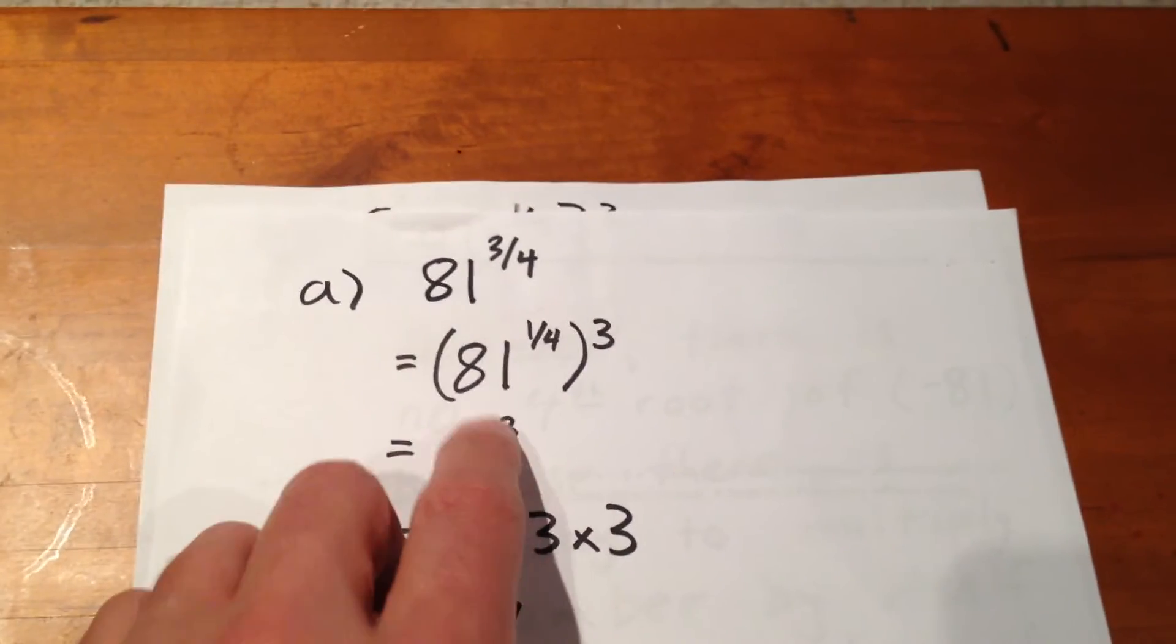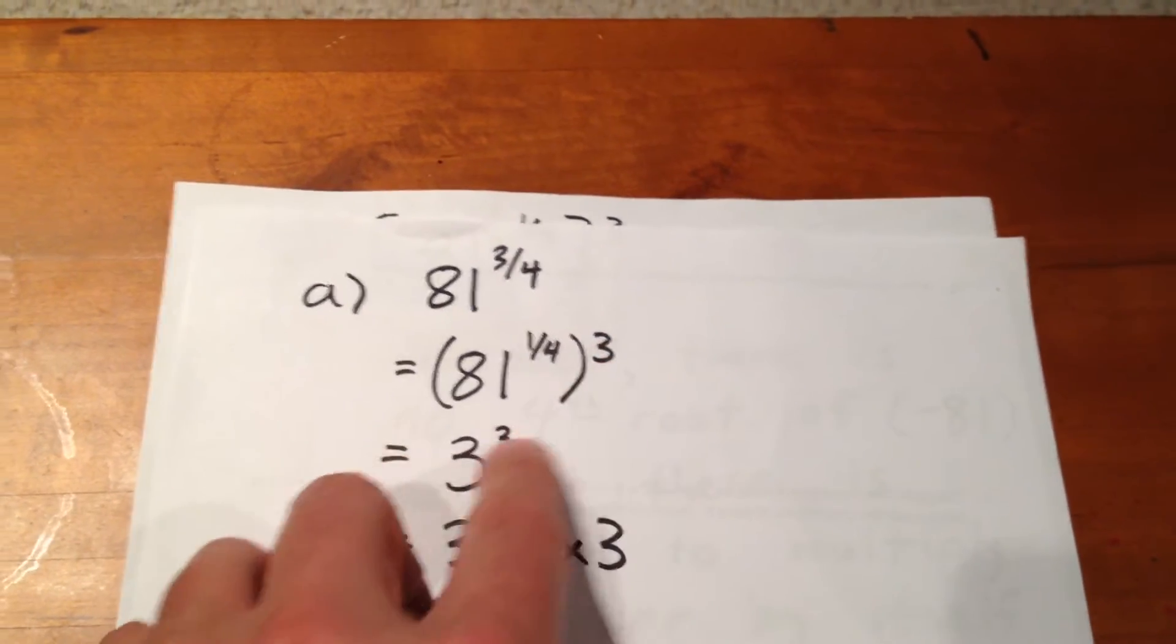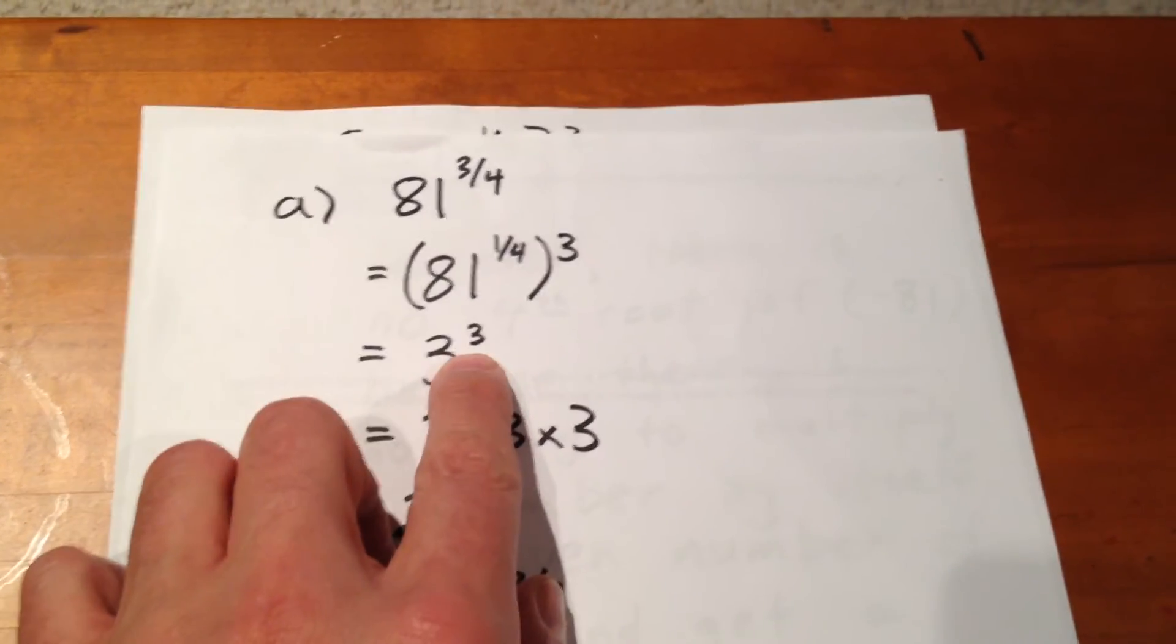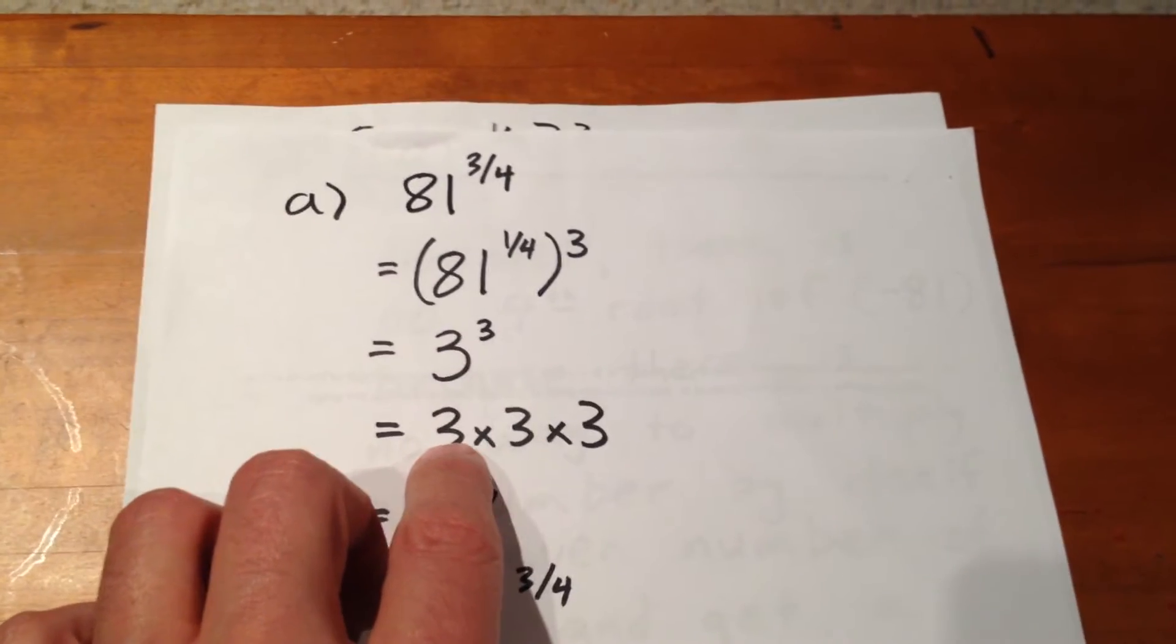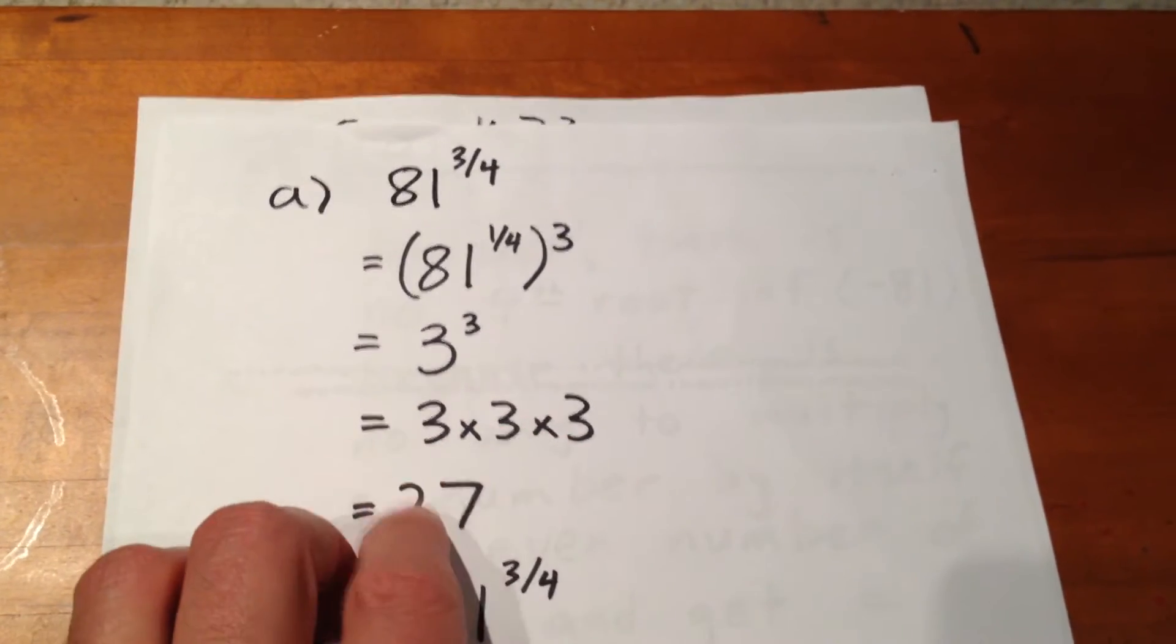Then, we have 81 to the 1 quarter equaling 3, the exponent of 3 being brought along. 3 to the exponent 3 is equal to 3 times 3 times 3, which is 27.